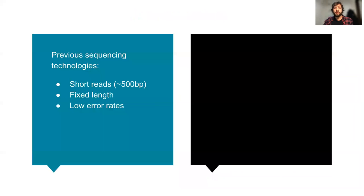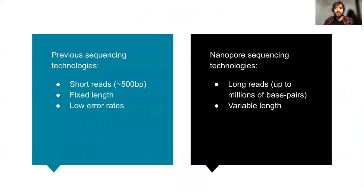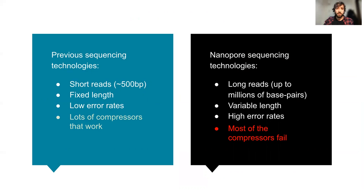In contrast to previous technologies, reads generated by nanopore sequencing are really long, of variable length, and have high error rates. However, most of the compression algorithms available in literature are specifically tailored to compress high quality short reads, and therefore they do not perform well or at all on the noisy long reads generated by Nanopore sequencing.